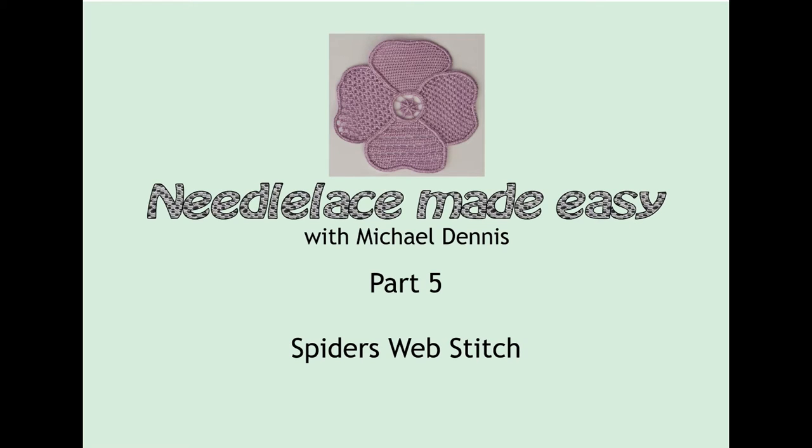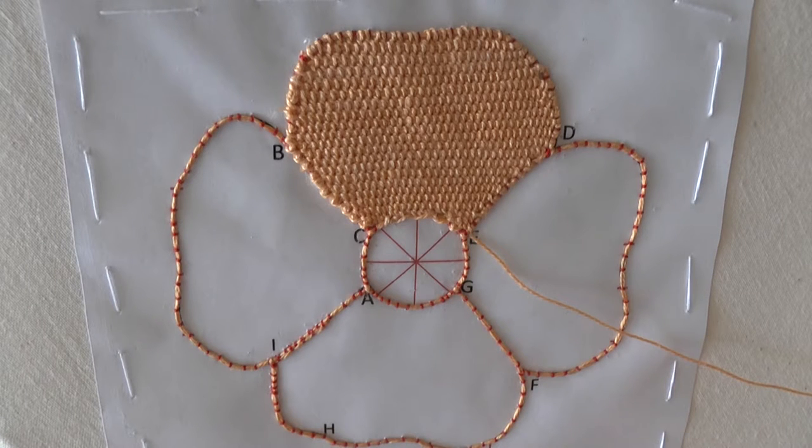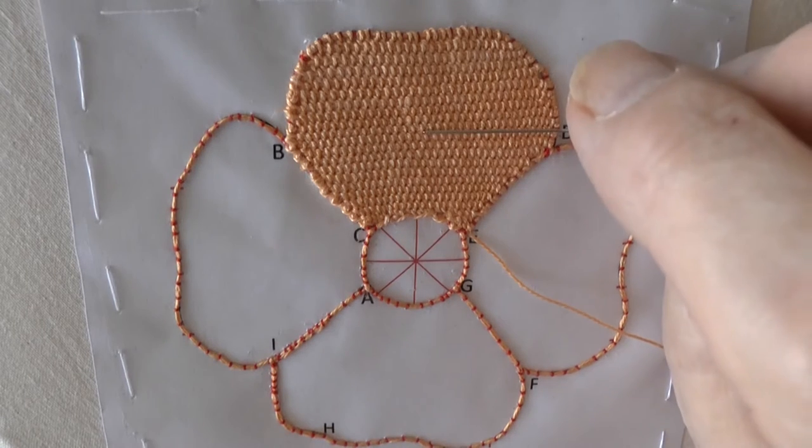Hello and welcome back to Needle Lace Made Easy, Michael Dennis here again. In this video I'll show you how the filling stitch in the center of the shape is made. This stitch is known as spider's web stitch. As I said in the last video, I have enough thread from working the corded single Brussels on the top here.